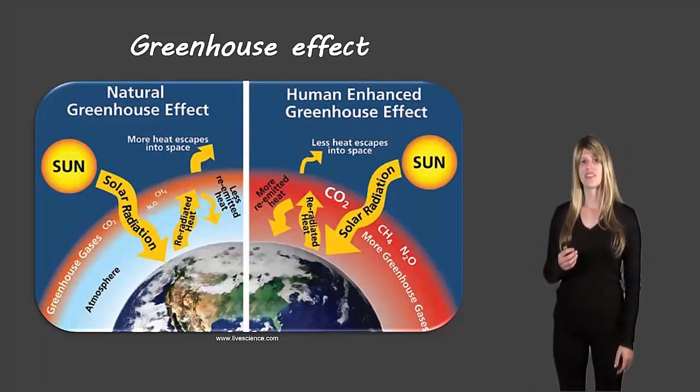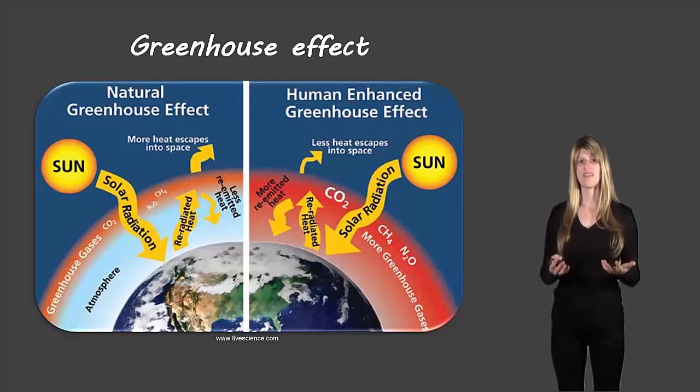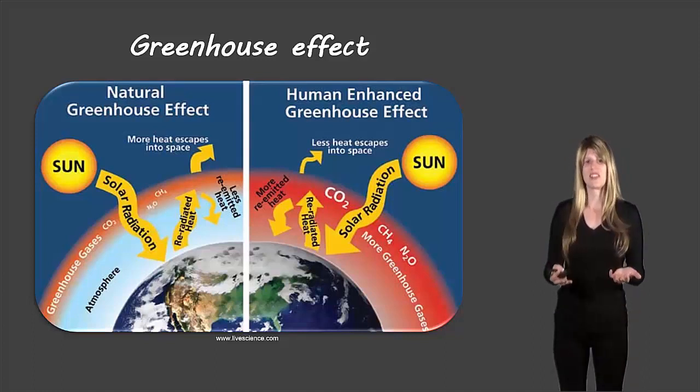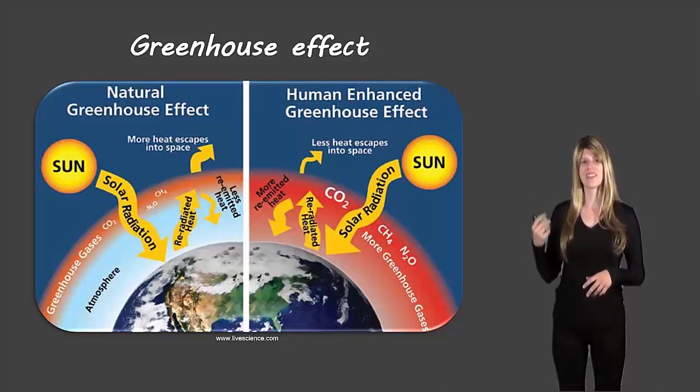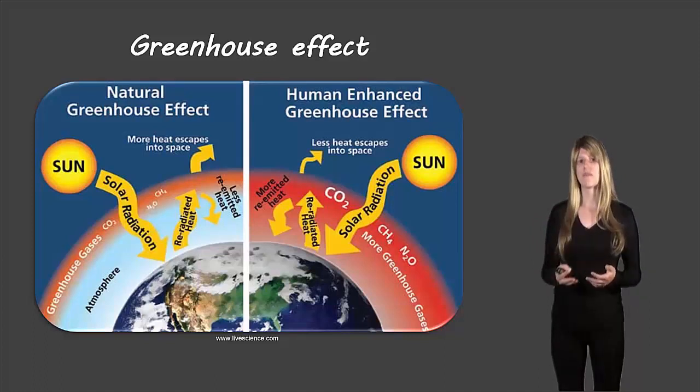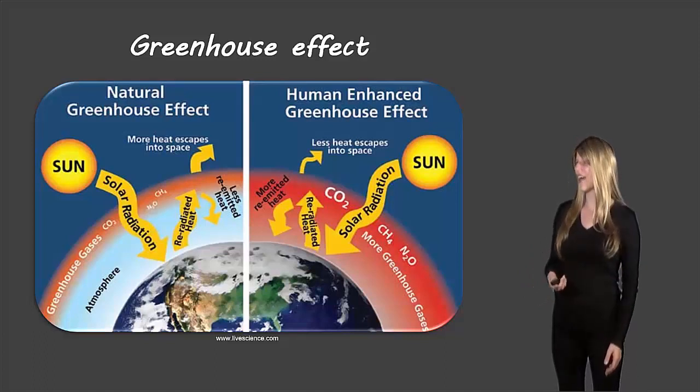On the left you have the natural greenhouse effect and all the positives that it brings including making this earth a temperature that we could even live on. And then on the right we have the human enhanced greenhouse effect or the anthropogenic greenhouse effect and how it's heating the earth up a little bit too much and we know there's some negative consequences related to that.